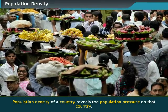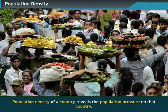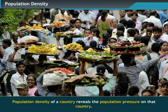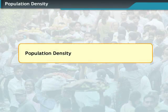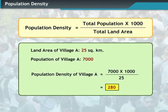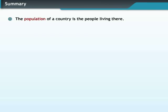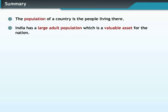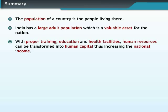The population density of a country reveals the population pressure on that country. It is measured by dividing the total population of a country by the total land area of the country, multiplied by 1,000. Let us now recap all the important points that we have covered in this module on human resources and population growth.